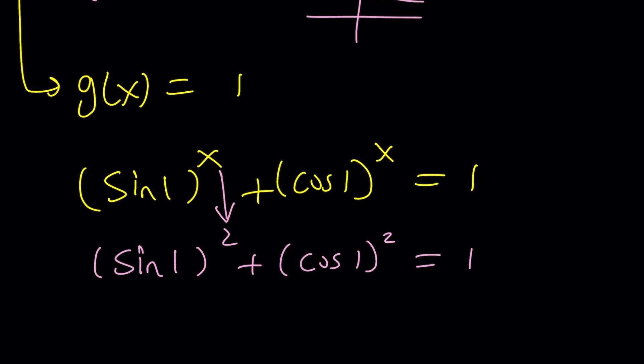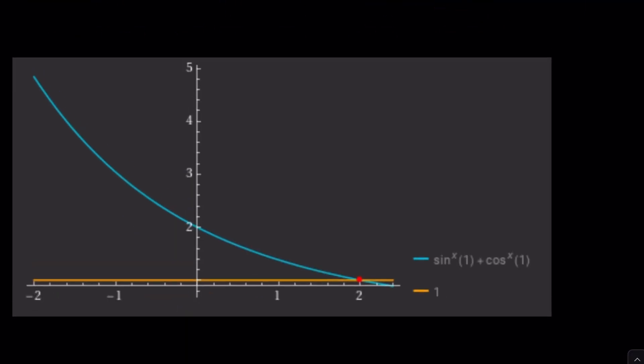Therefore, this equation has a single solution, and that is x equals 2. Does that make sense? Okay. I hope it does. That's basically what it is. And here's a graph of our function intersecting the horizontal line at a single point.